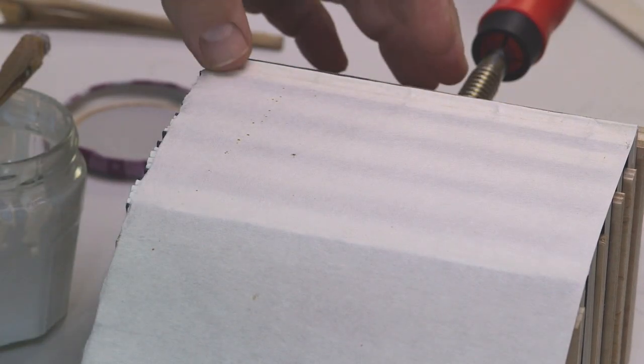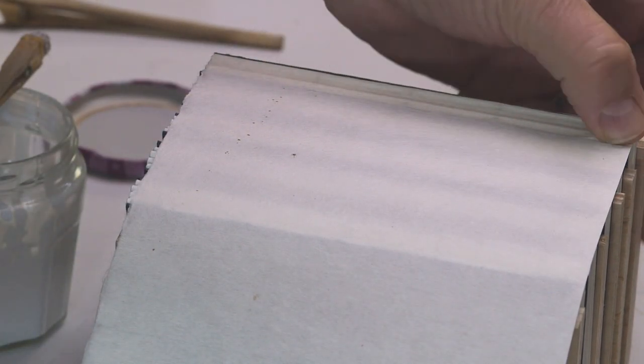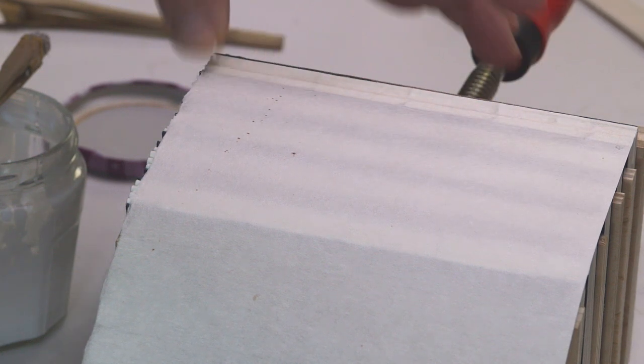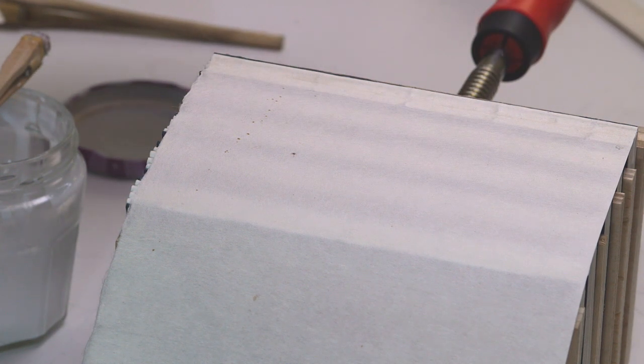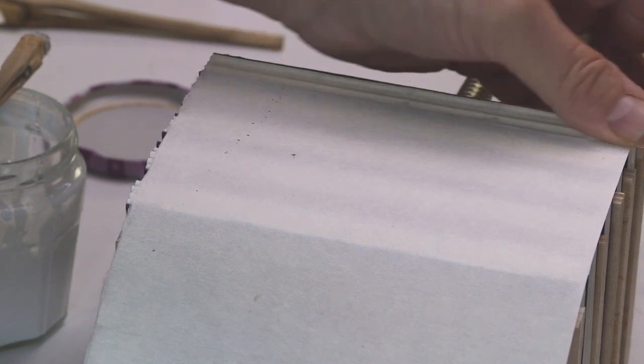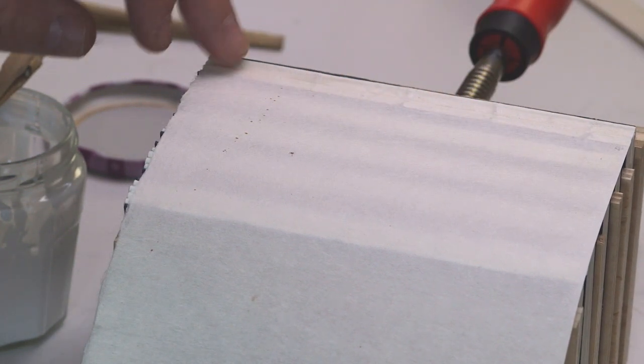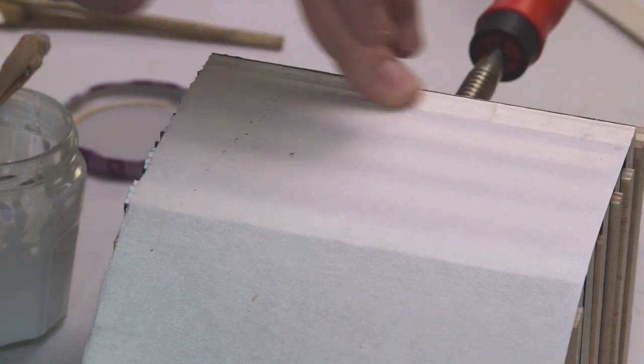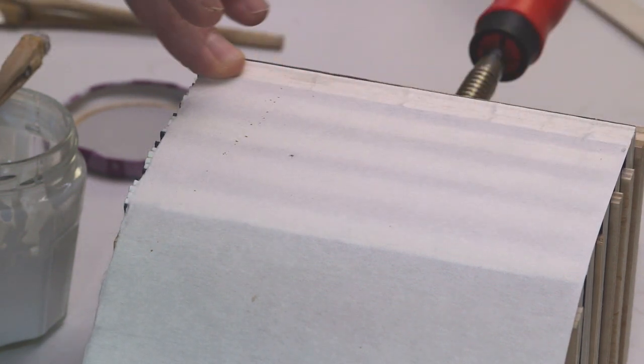I'm taking my finger. This paper is on the fragile side. I could use a teflon folder or bone folder, but my finger helps mold the paper into the ridges of the spine.